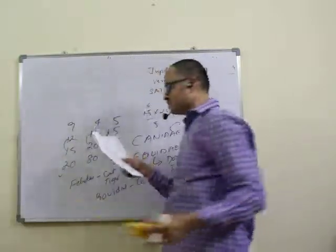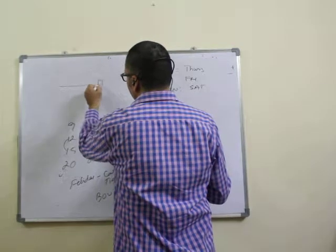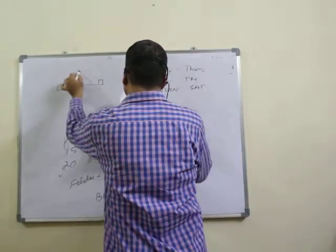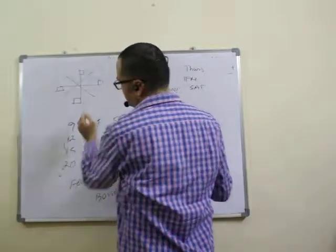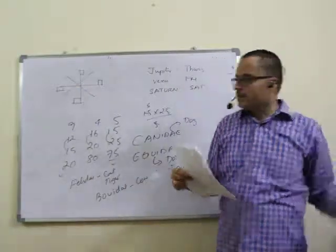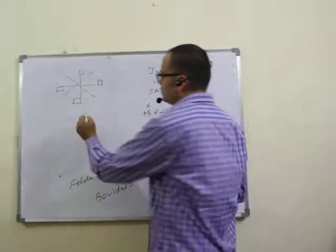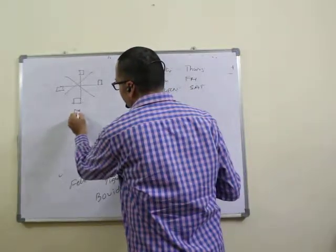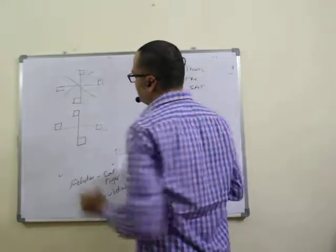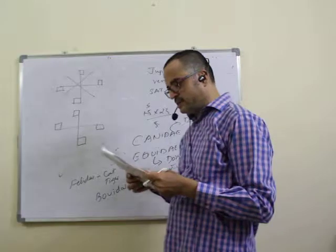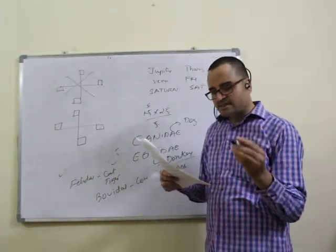Question twenty-one is about the water image of a given structure. In a water image, top becomes bottom and bottom becomes top; left remains left. The given figure is flipped vertically. Based on that, the answer is second option — twenty-first question, second option.